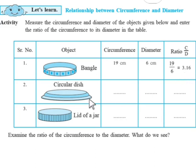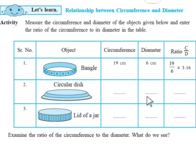Now let us find out for a circular dish. Everyone must be having a circular dish at their house. You have to take any dish and find the circumference and diameter of it. After measuring, you will find the ratio. When I took the measurement, I got the circumference of the circular dish as 40 cm and diameter as 13 cm. So when I divide 40 by 13, I got it as 3.07.